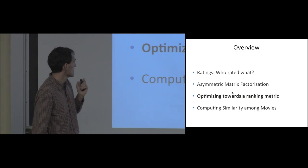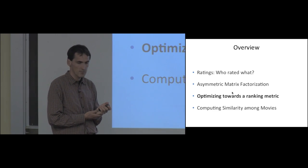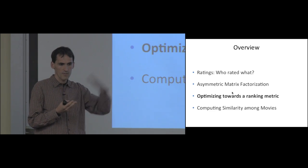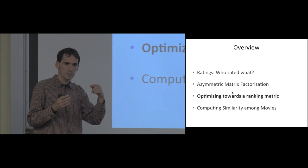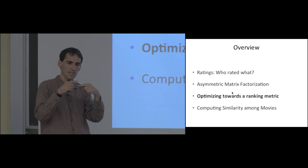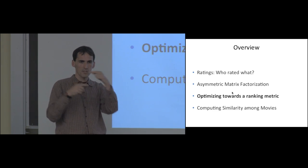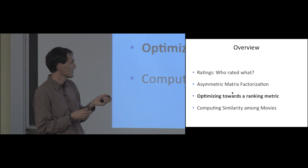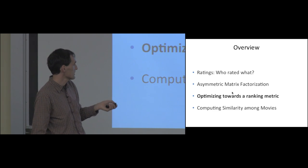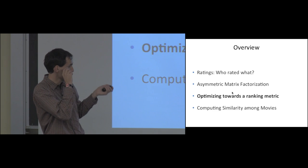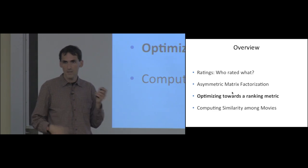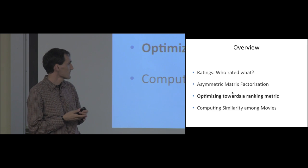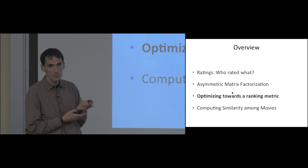Now let's talk about optimizing towards a ranking metric. This is typically a difficult problem because the ranking of items is not a smooth function of the scores. If two items have similar scores and one gets a slightly higher score, the ranking suddenly changes, making optimization quite complicated. Many different approaches have been developed, and I want to talk about one that takes into account special properties of our feedback data and the matrix factorization model.